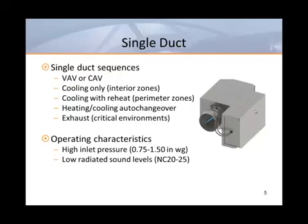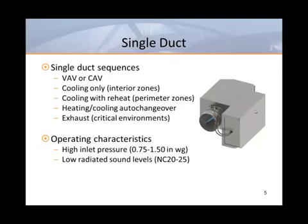Most single duct boxes, regardless of manufacturer, use the same round inlet and rectangular outlet configuration. This design reduces the inlet pressure requirement due to the static pressure regain that occurs when the air expands to fill the rectangular cabinet. The only real differences that distinguish between most manufacturers are lining options and inlet sensors. Multipoint center averaging sensors are preferred because they can provide improved accuracy with poor inlet conditions. Although single duct boxes have very low pressure requirements, the addition of reheat coils, especially multi-row water coils, can result in inlet pressure requirements as high as 1.5 inches of water.